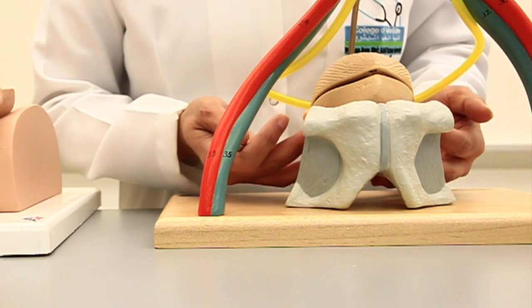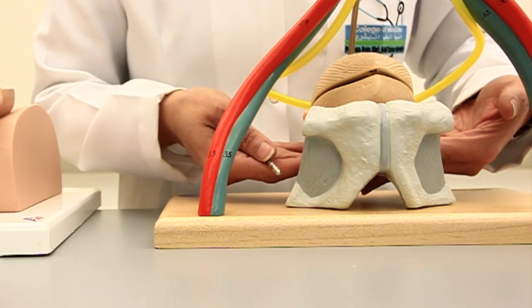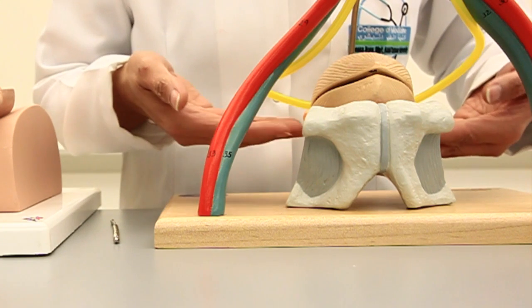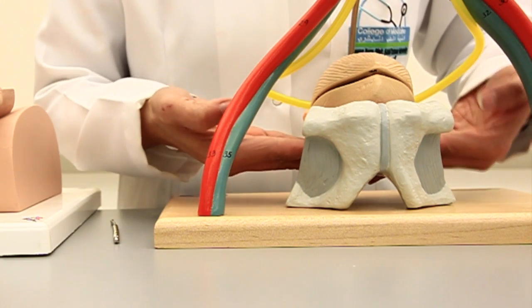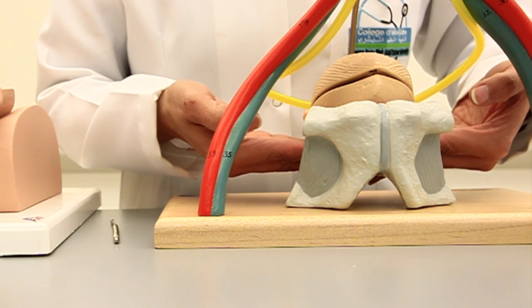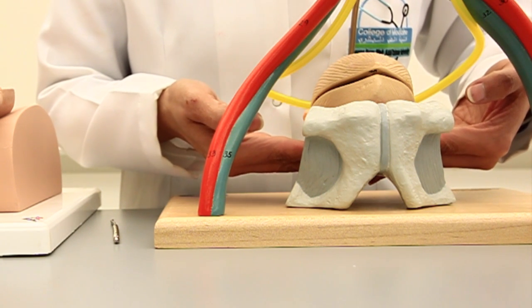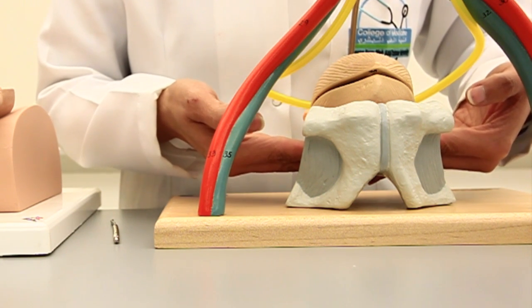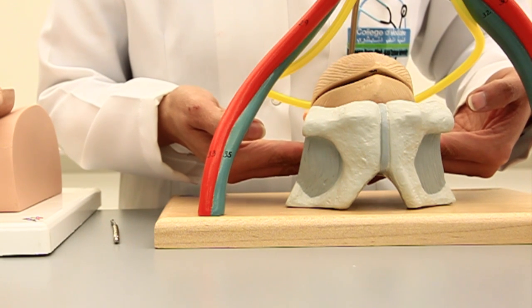So this is lying on the pelvic floor. Imagine my hands, if you're able to see, my hands are representing the pelvic diaphragm. So the urinary bladder is a structure or the organ which is lying on the pelvic diaphragm.